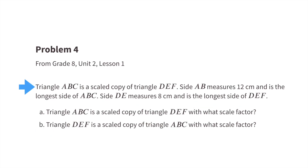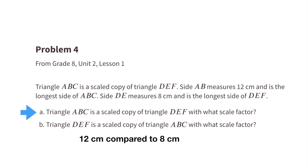Number four: triangle ABC is a scaled copy of triangle DEF. Side AB measures 12 centimeters and is the longest side of ABC. Side DE measures 8 centimeters and is the longest side of DEF. Part a: Triangle ABC is a scaled copy of triangle DEF with what scale factor? 12 centimeters compared to 8 centimeters is a 12 to 8 ratio, which simplifies to 3 to 2, or 3 halves. The scale factor would be 3 halves.